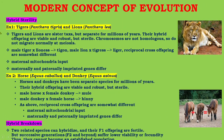Hybrid sterility example: tiger Panthera tigris and lion Panthera leo are sister taxa but have been separate for millions of years. Their hybrid offspring are viable and robust but sterile, because chromosomes are not homologous and do not migrate normally at meiosis. A male tiger mated with a female lion gives rise to a tigon, and a male lion mated with a female tiger produces a liger. Similarly, horses Equus caballus and donkeys Equus asinus have been separate species for millions of years; their hybrid offspring are viable and robust but sterile. A male horse and female donkey produce a mule, and a male donkey and female horse produce a hinny. In both cases, reciprocal cross offspring are somewhat different due to maternal mitochondrial input and maternally and paternally imprinted gene differences.